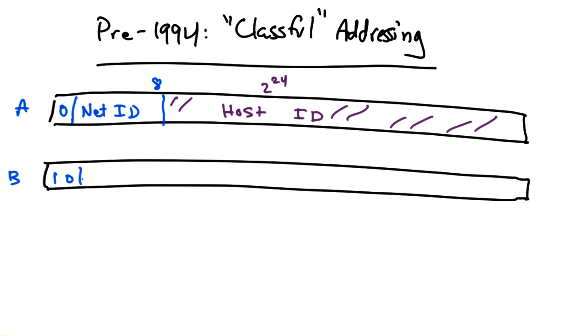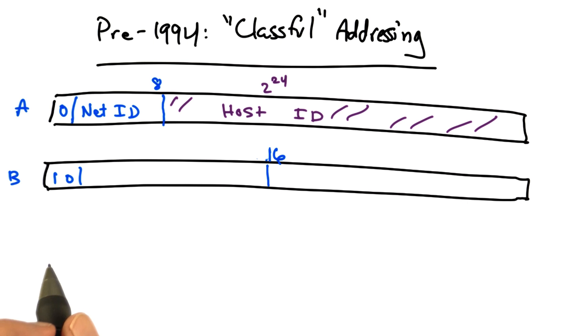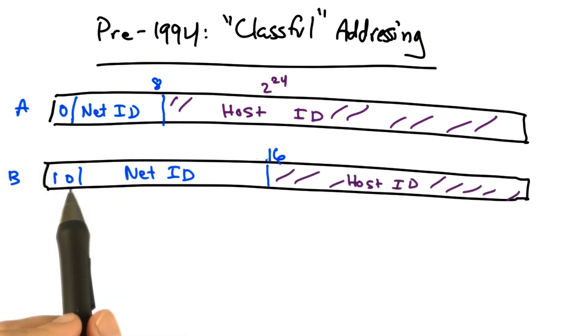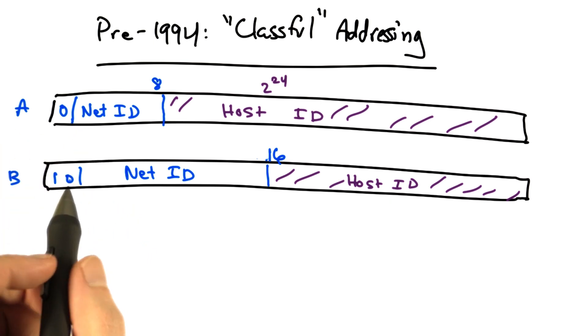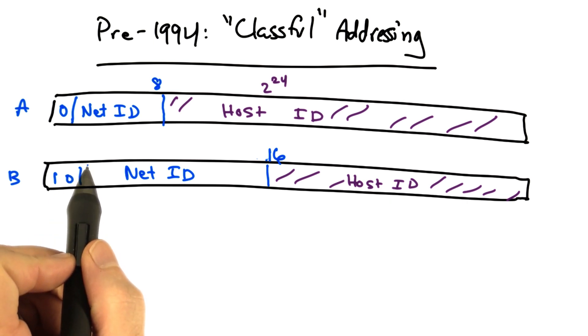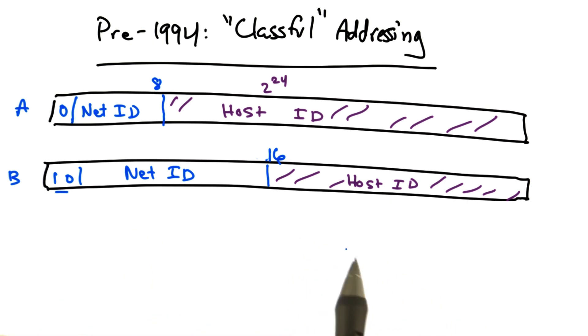Addresses that started with 1 0 were designated as class B networks, where the first 16 bits signified the network ID, and the remaining 16 bits signified the host ID for that network. Note here that each class B address range represents about 1/65,000th of all Internet address space. So discounting the first 2 bits, which indicate that this is a class B network,